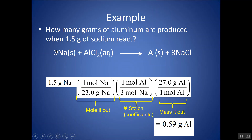Notice that even though sodium has a coefficient of 3, that does not affect the molar mass. The formula Na has a mass of 23 grams per mole regardless of the coefficient. I did use that 3 in the stoichiometry step, so make sure you're only using this 3 to 1 ratio once in your conversion.